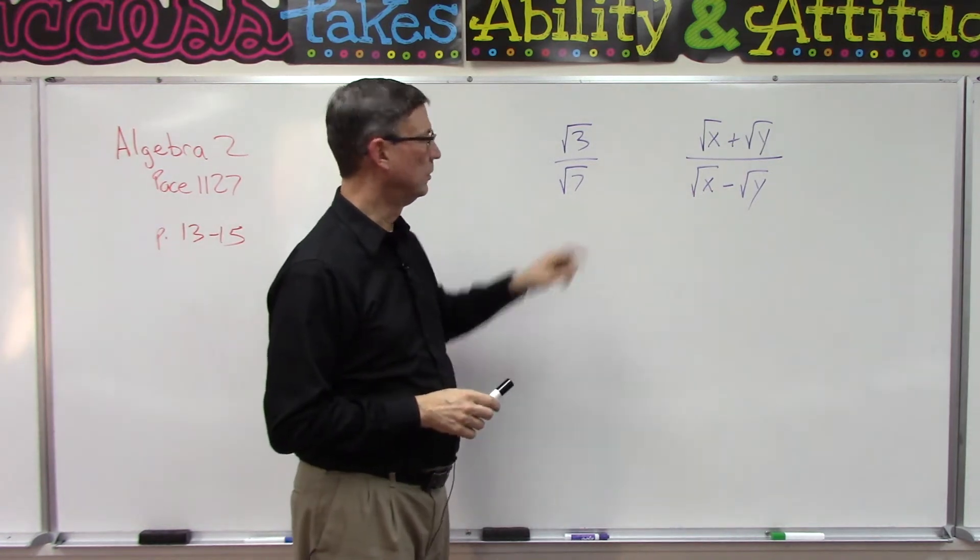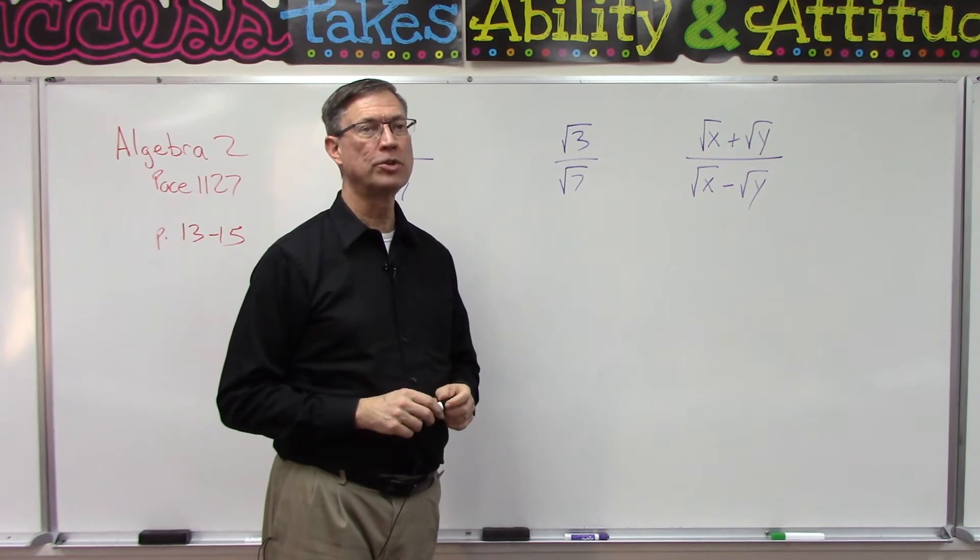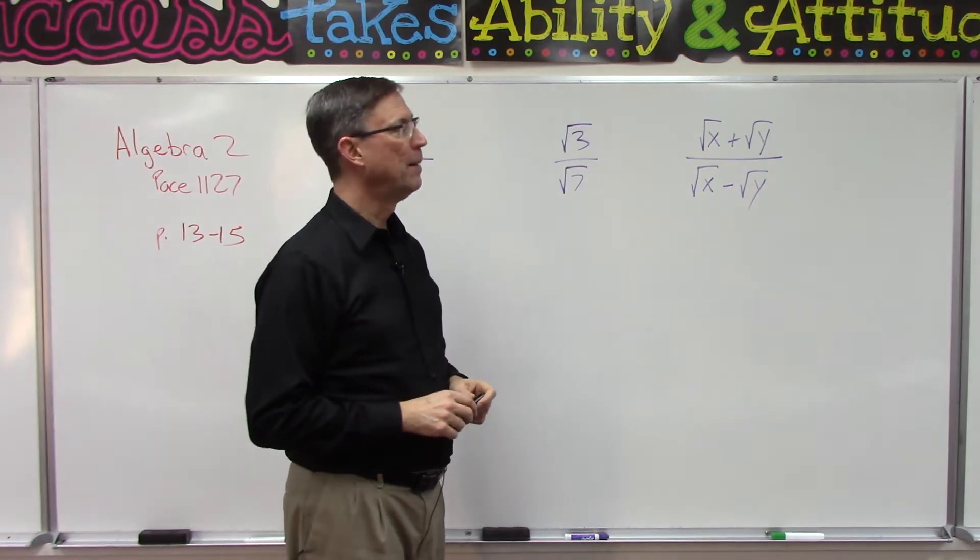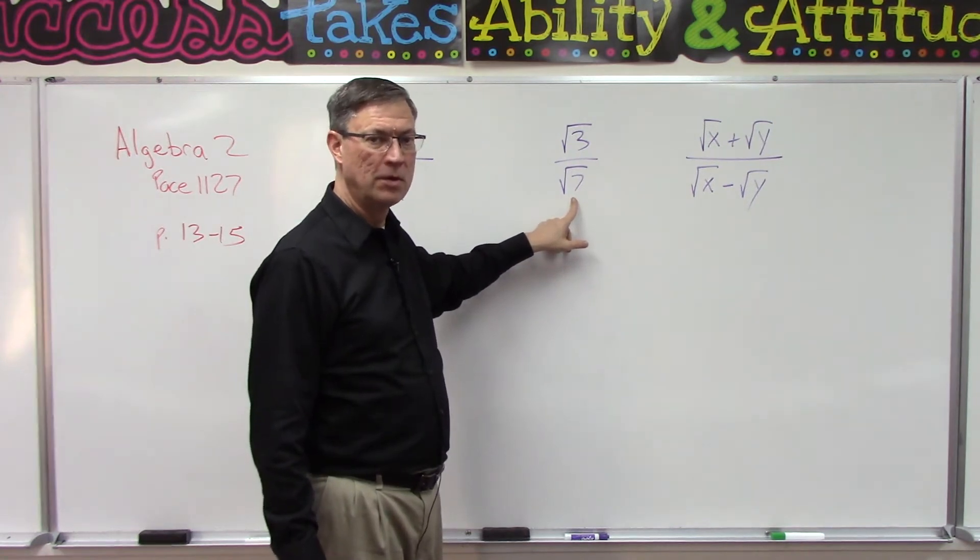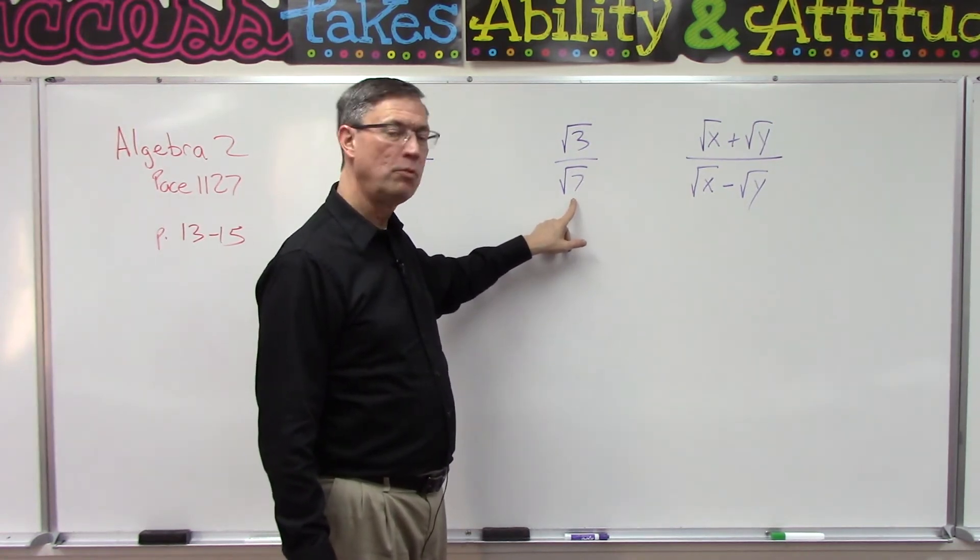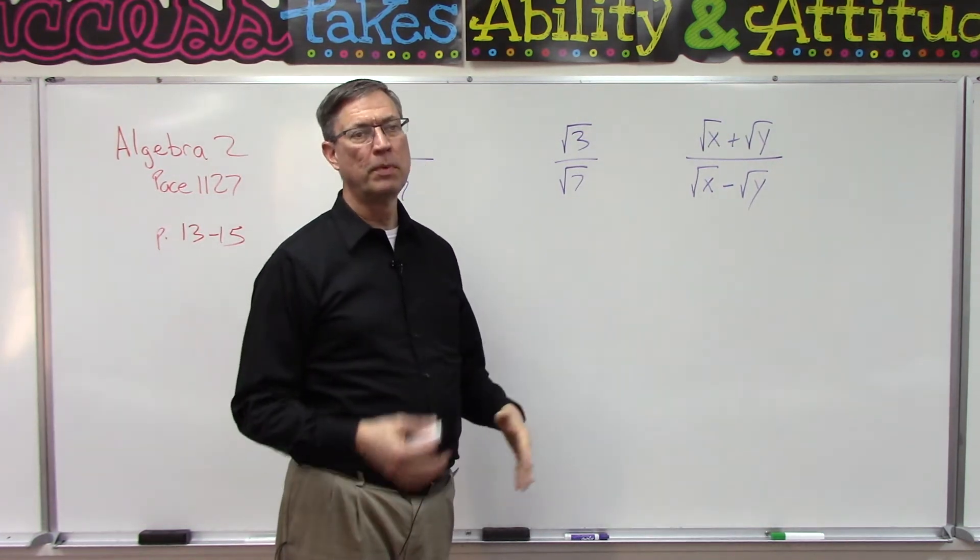So we have to go through a process called rationalizing the denominator, which means turning this irrational denominator, which is a radical, into a rational number. It's not that hard to do, but it's just a little bit of gymnastics.